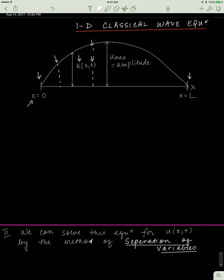Another thing you should know is that when u is at a maximum — meaning the biggest height that the string or the wave can take — that is called the amplitude of the wave, and it's basically just u-max.